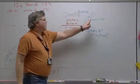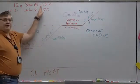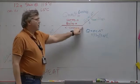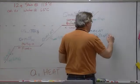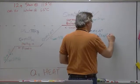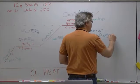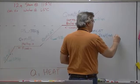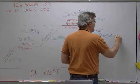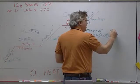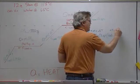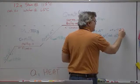And then the delta T, we're going to go from 115 degrees down to 100 degrees. That's the point at which it boils or condenses. So we have 100 degrees Celsius minus 115 degrees Celsius. So our delta T here is minus 15 degrees Celsius.